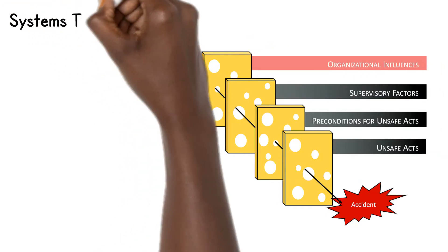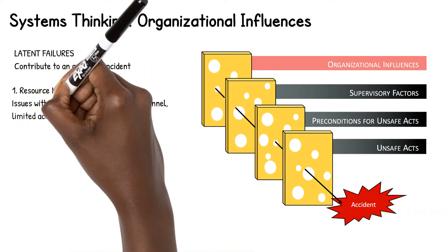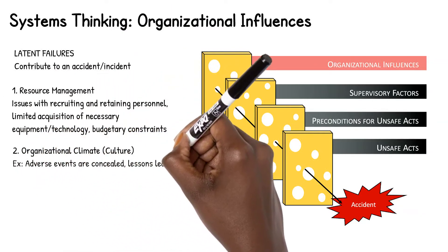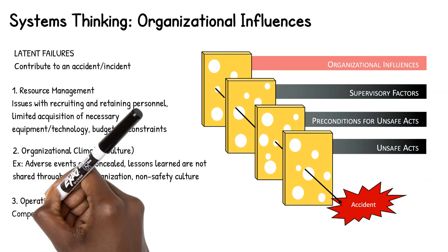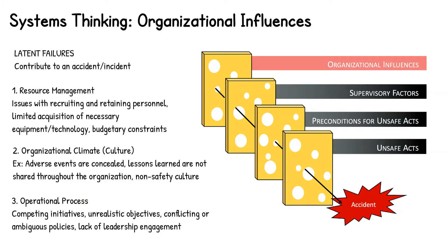Supervisory practices and the conditions and actions of operators are directly impacted by the decisions made by upper level management. As such, the fourth and final tier of James Reason's model examines the impact of organizational influences on failures in a system. Organizational influences are impacted by the operational process, resource management, and organizational culture. There are three causal categories — resource management, organizational climate, and operational process — that can be used to better understand issues that occur at this tier.